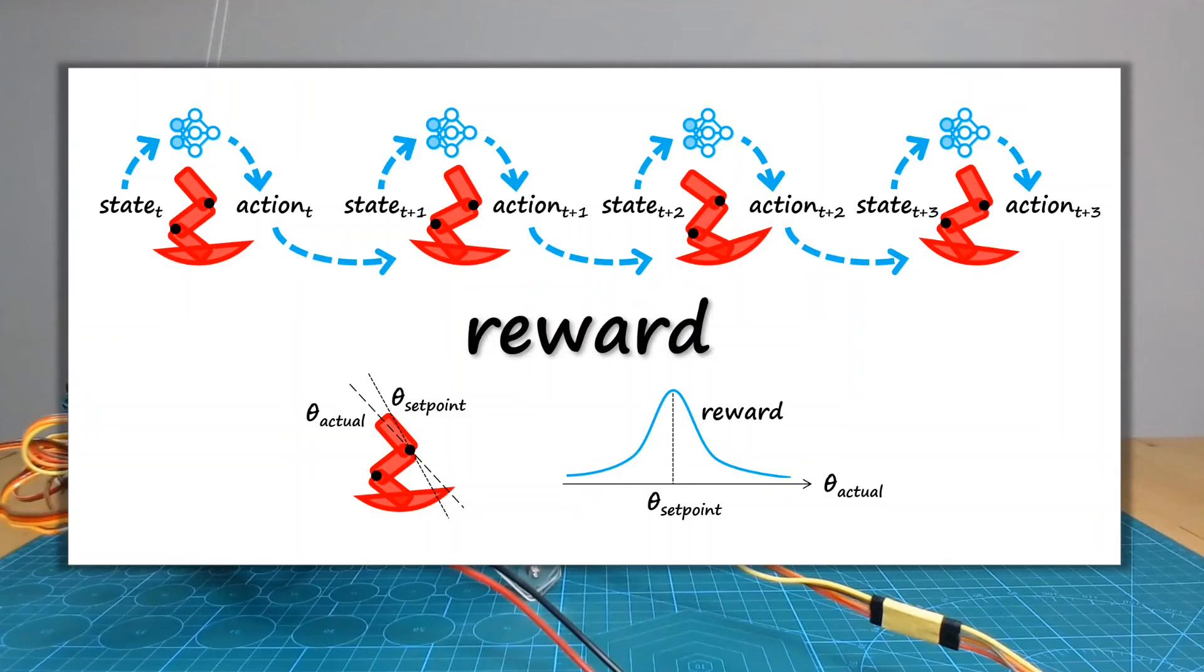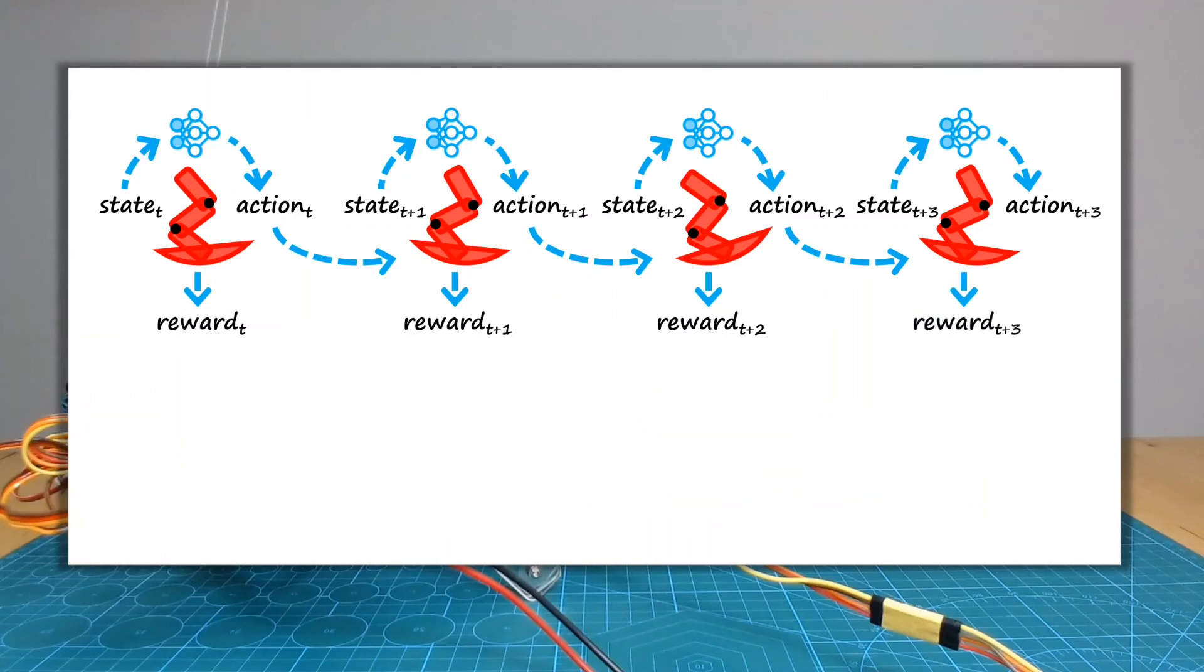So with our reward definition, we can calculate the value for each of the states in our data and add this into our data set. Taking a closer look, for each step, our data set now contains a mapping from state plus action to a future reward value.